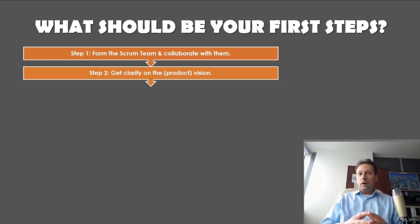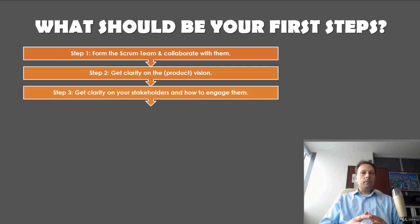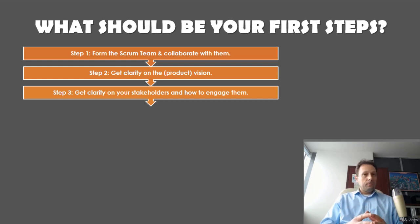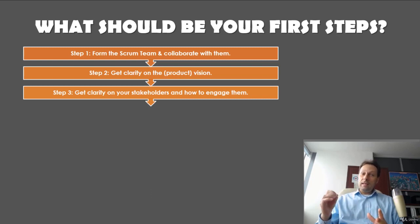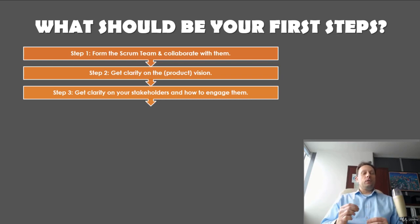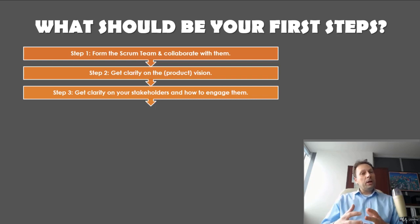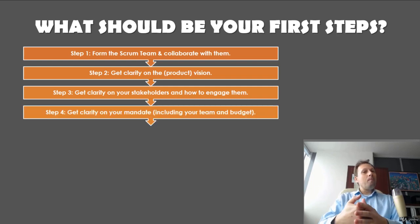Step three: get clarity on your stakeholders and how to engage them. One of your responsibilities as a product owner is to engage with your stakeholders, including customers. Make sure the right people are sitting together with you to decide on the product vision, product roadmap, and value for the product. As a product owner, involve the right stakeholders to maximize the value delivered to your customers. You will likely spend most of your time on your most important stakeholders, so design your communication strategy accordingly.